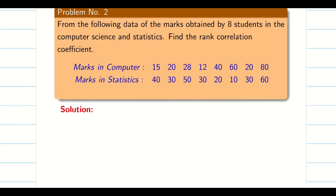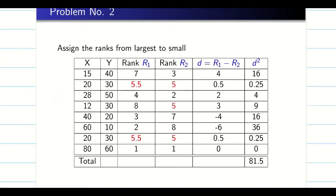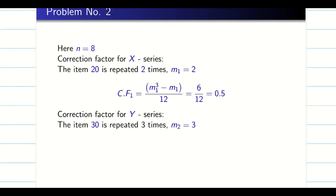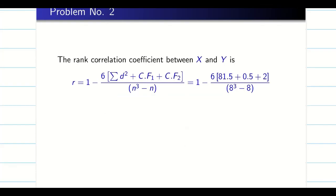Now take this practice problem: find the rank correlation coefficient for marks in Computer Science and marks in Statistics. Since there are eight values, allocate eight rank numbers in rough work and exhaust them one by one to avoid errors. After computing ranks, d², and the correction factors — since there are two repeated values there are two correction factors — substitute into the formula. The result r = 0, meaning marks in Statistics and marks in Computer Science are not correlated.